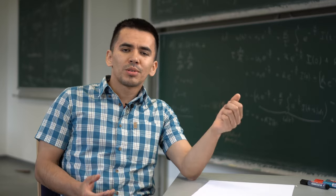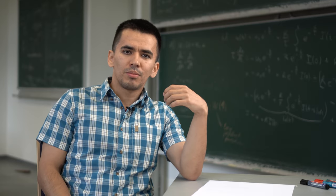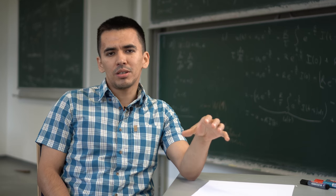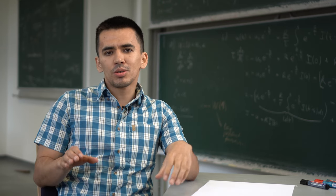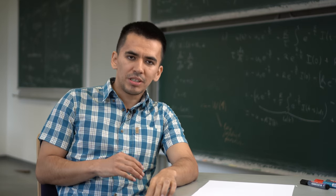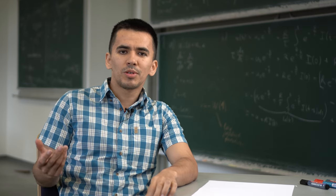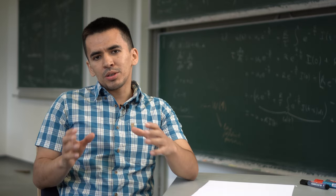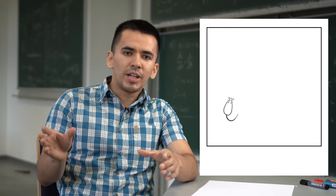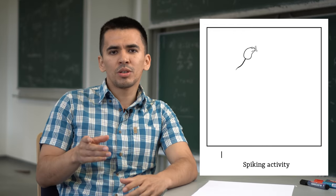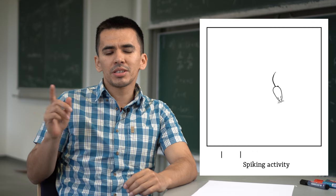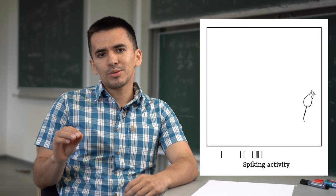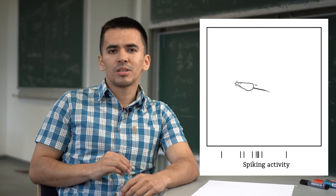I think one of the coolest examples of neuronal tuning comes from the place cells. These are typically found in the hippocampus and these are the neurons that increase their activity when a person or an animal is located at a particular place or passes through a certain place. You can see here a rat runs around a room and a particular neuron we are looking at increases its activity in the bottom right corner. So it is selective to that particular location.